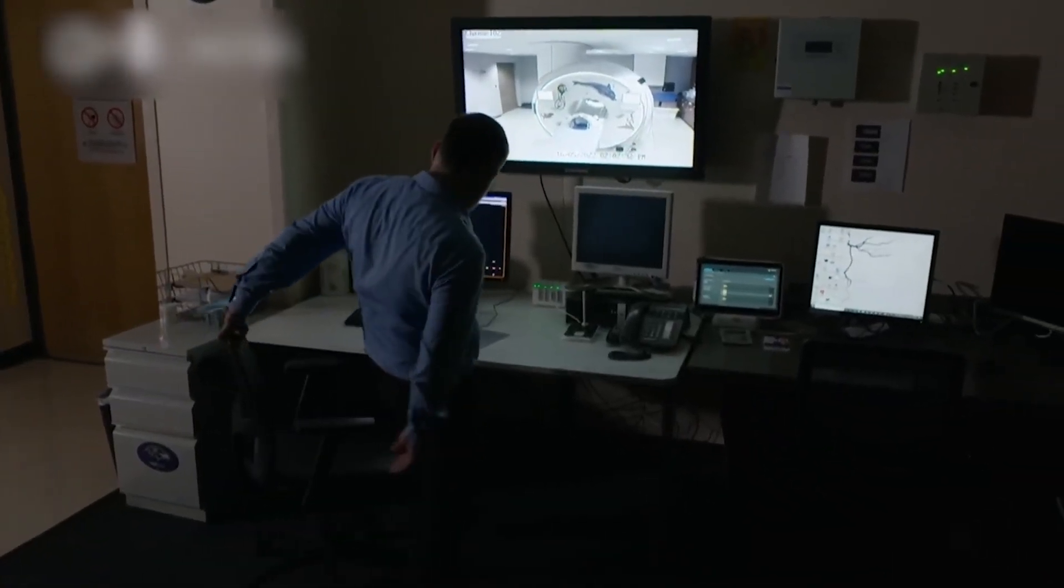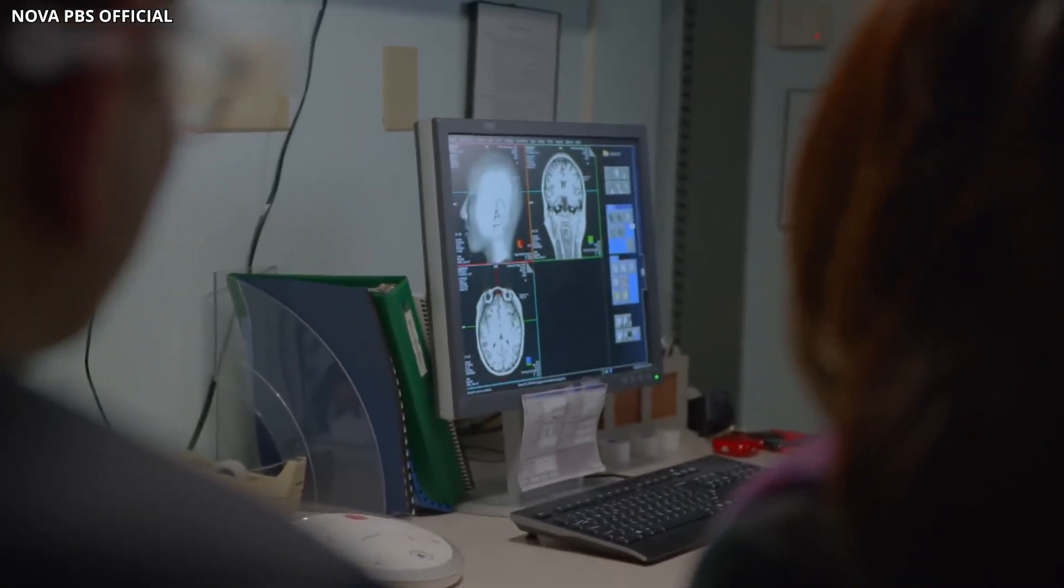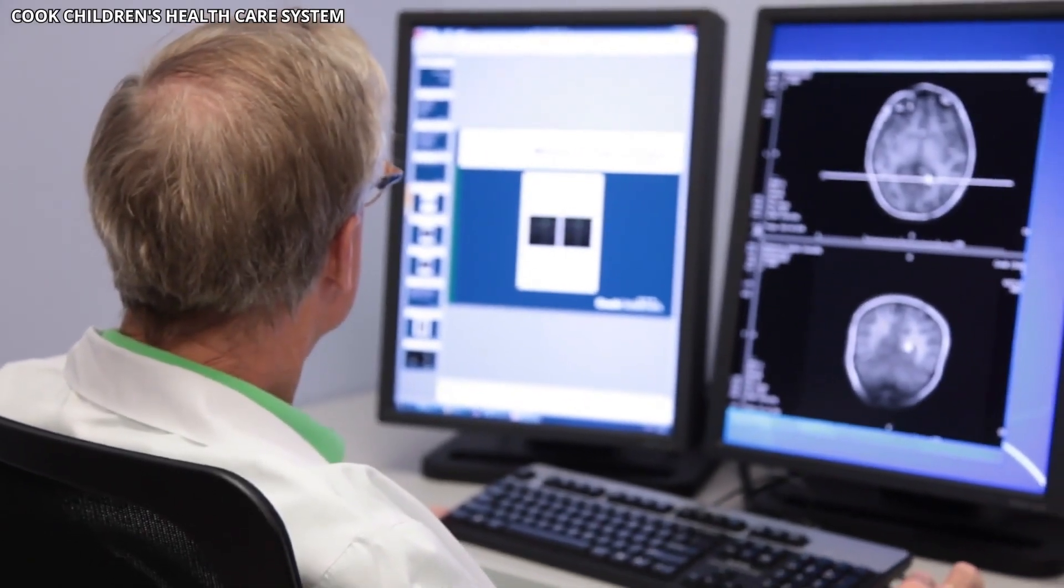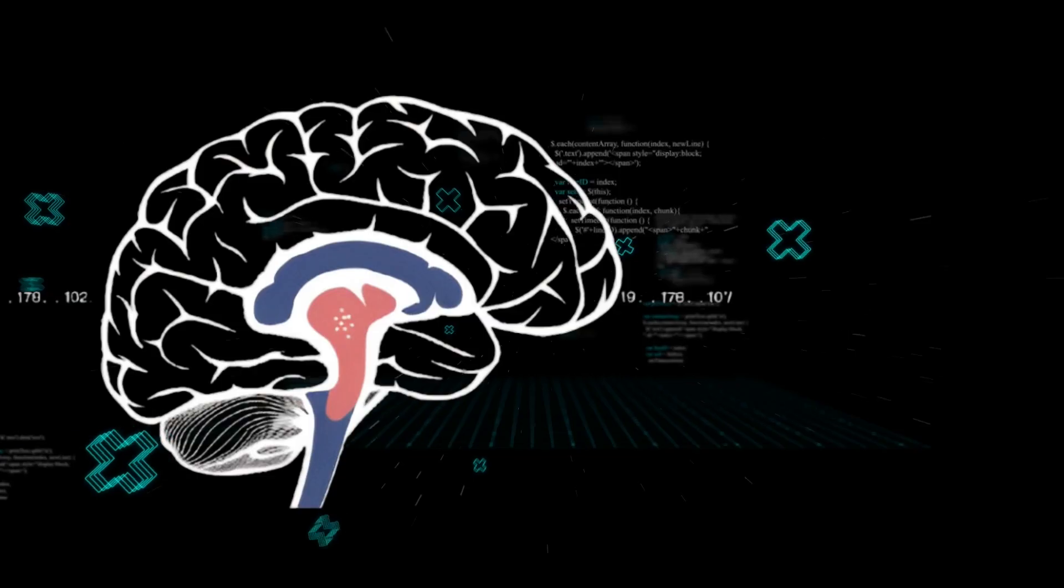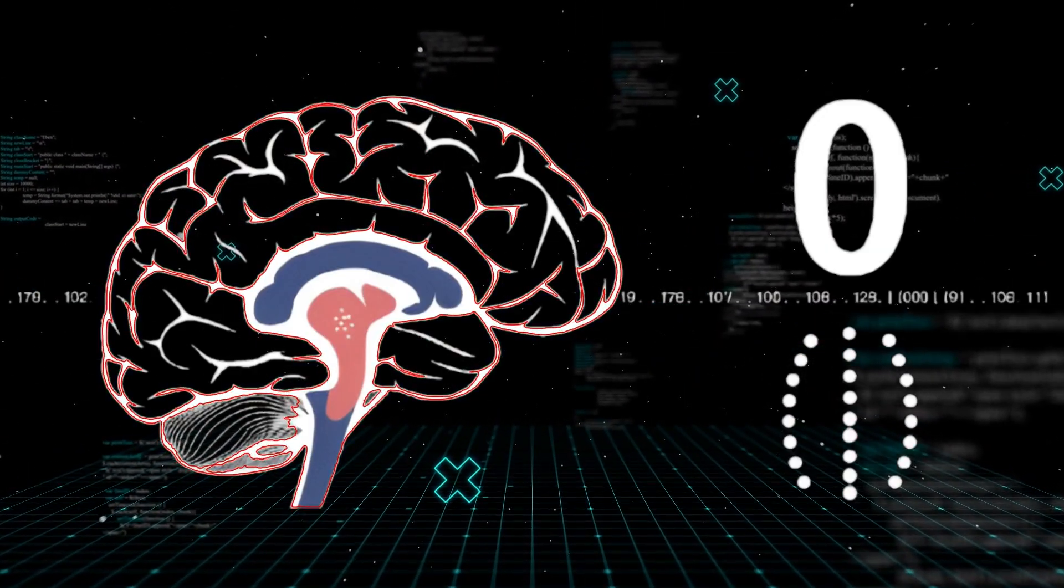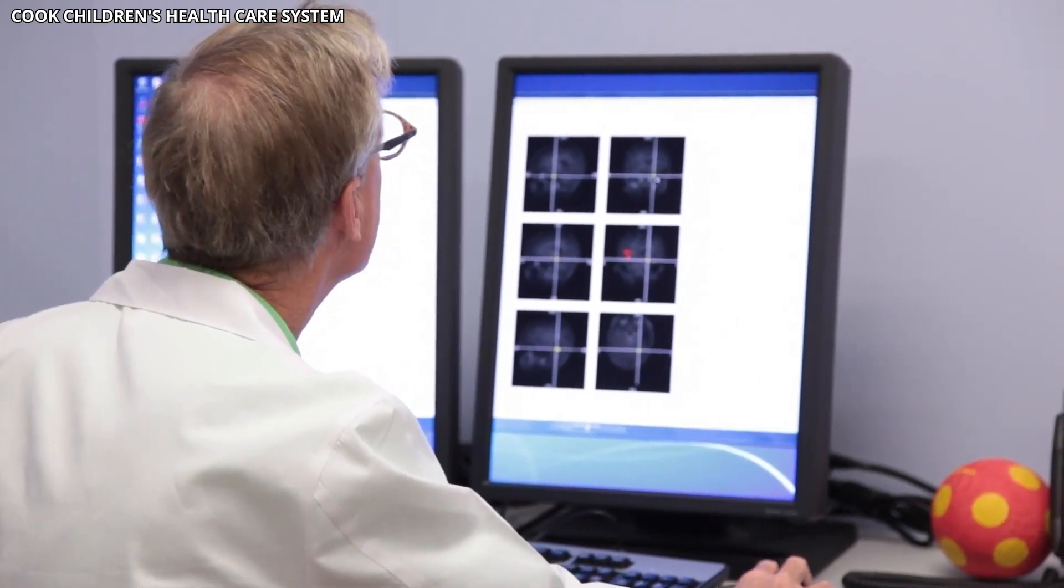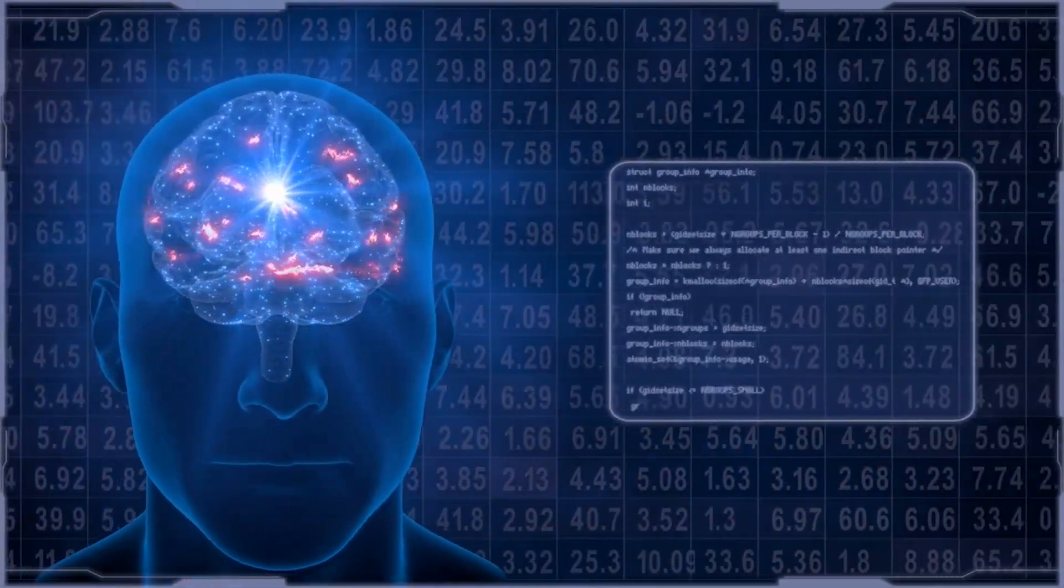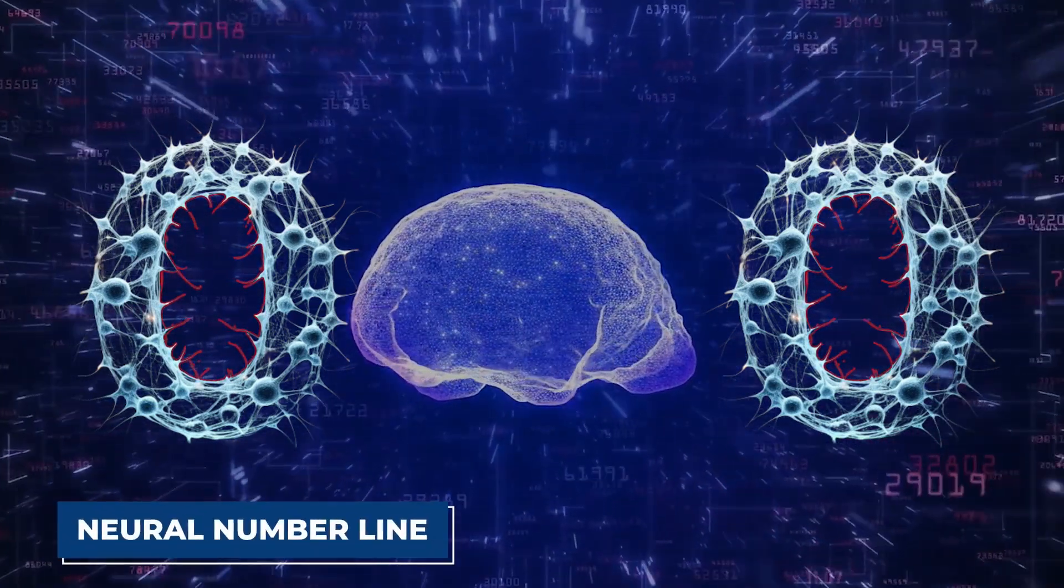Barnett's research published in Current Biology investigated the brain's processing of zero. Using magnetoencephalography, he and his team studied brain activity in participants performing zero-related tasks. Their findings revealed that the brain treats zero both as a digit and a quantity, similarly to other numbers, exhibiting the numerical distance effect. The brain distinguishes more easily between numbers farther apart on the number line. This suggests zero is represented on the brain's neural number line.